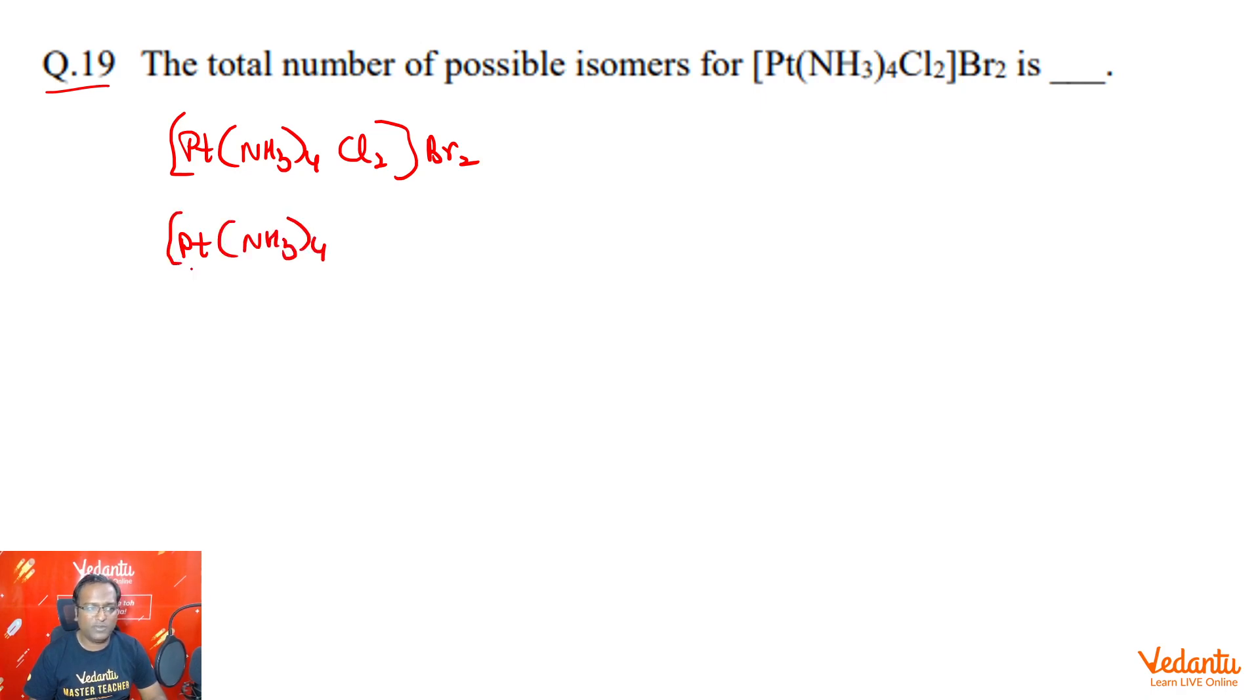So this compound can clearly undergo ionization isomerism. So this is one possibility and the other possibility is NH3)4, both the Brs are inside and then both the chlorines are outside. So these are the three ionization isomers possible.